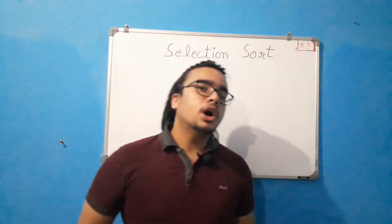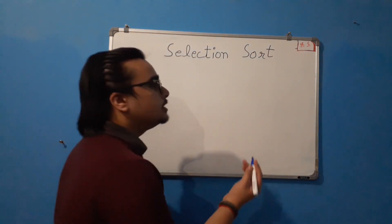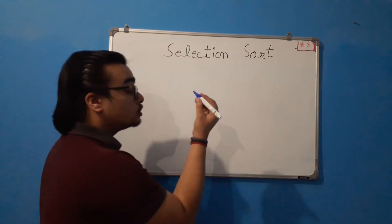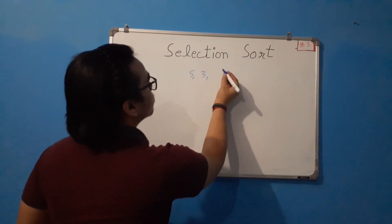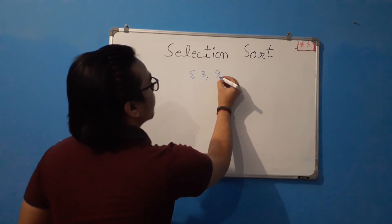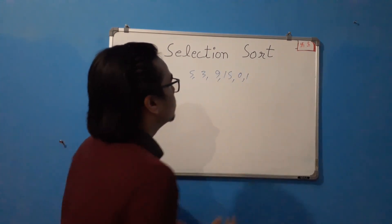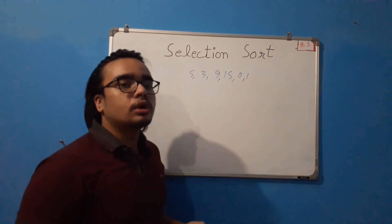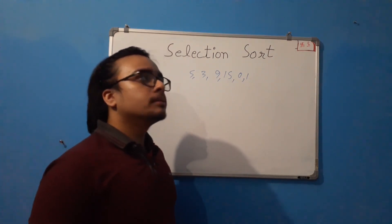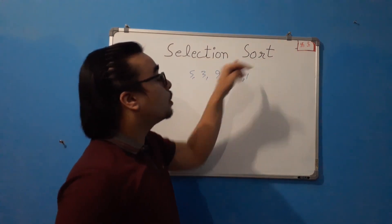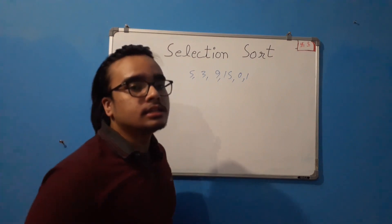Let me explain how selection sort works with an example. Let's say that we have an unsorted list: 5, 3, 9, 15, 0, and 1. This is an unsorted list and we are asked to create an algorithm using the selection sort method to sort this list.